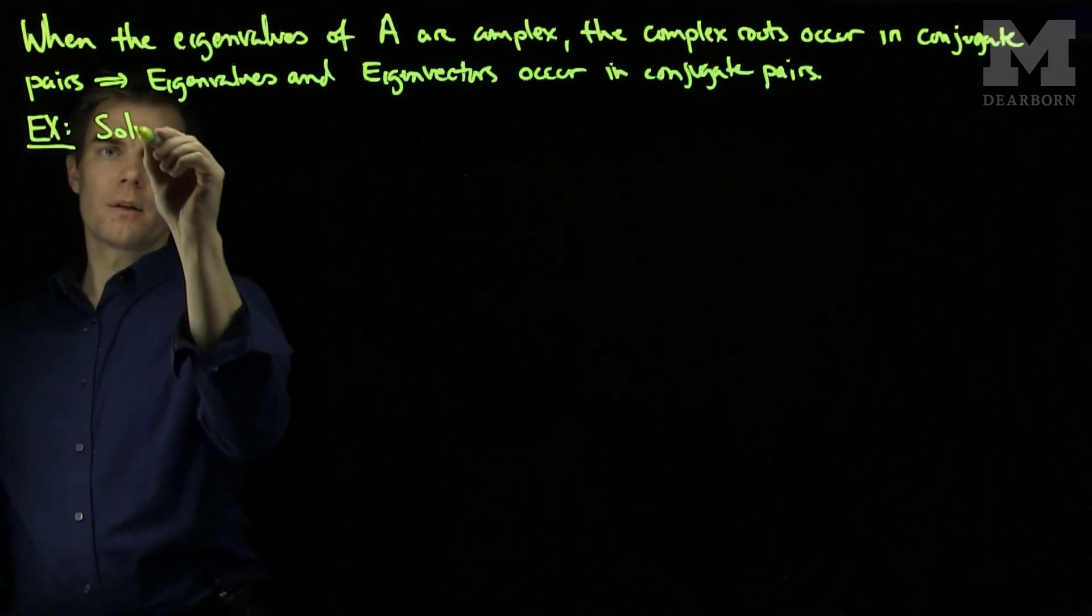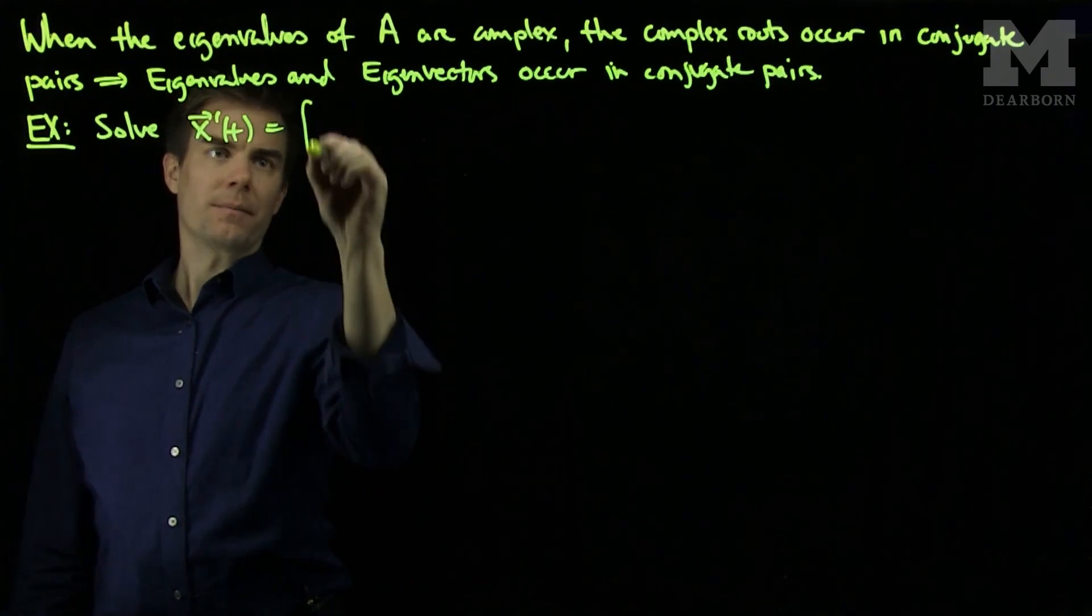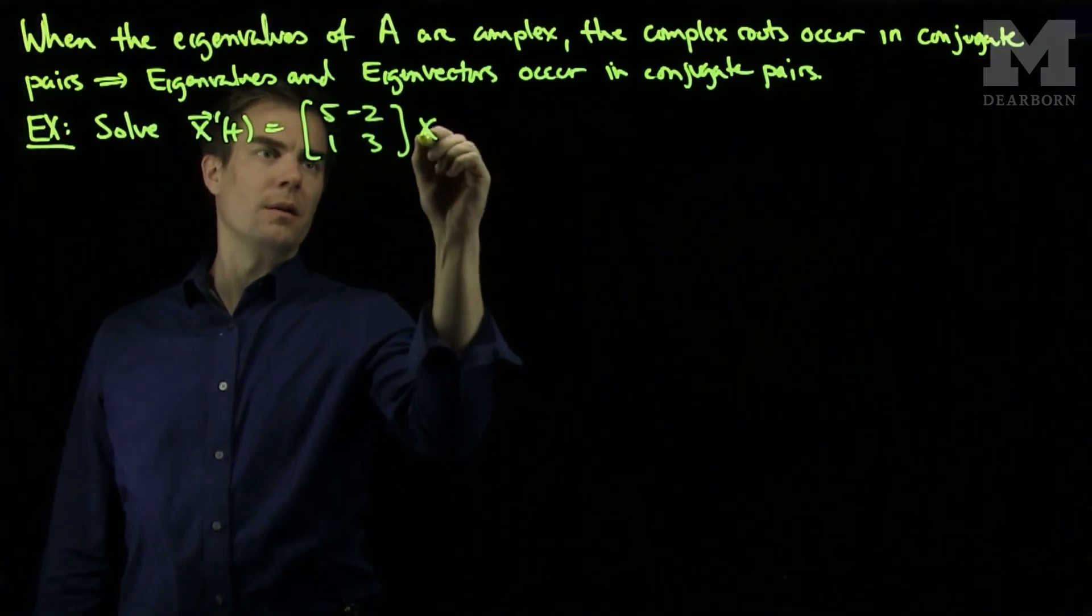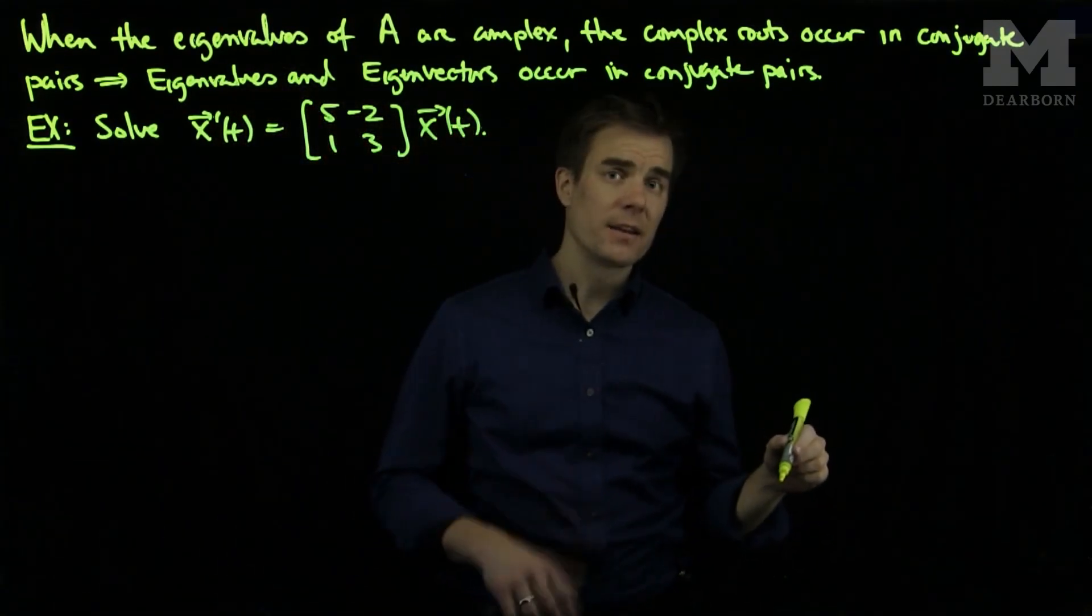Let's solve the dynamical system x prime of t equals the matrix [5, -2; 1, 3] times x of t. To do this, we'll find the eigenvalues of the matrix A.